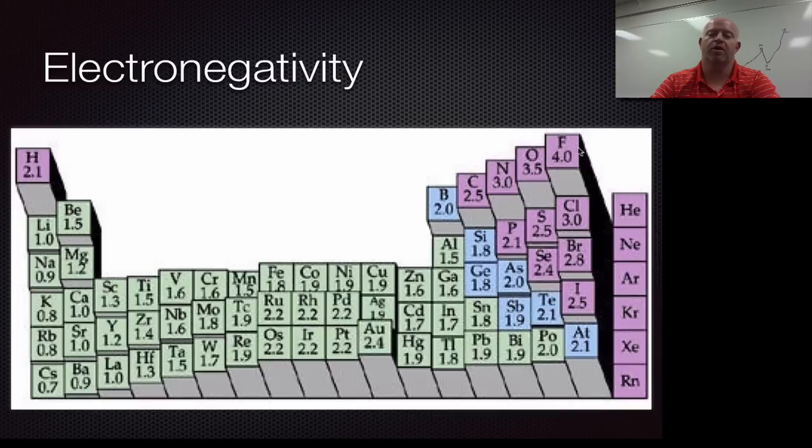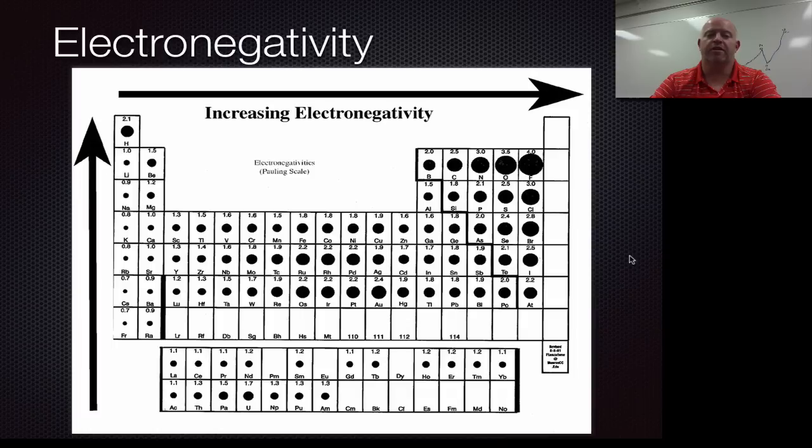So this corner over here, where you have really strong electronegativity, is also where you're looking at your smallest atoms. Now, of course, we exclude helium and neon here, because those are noble gases. So again, electronegativity is all about size. If we take a look at our chart, in terms of electronegativity, we tend to increase as we go from left to right, and we tend to increase as we go up.